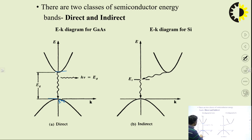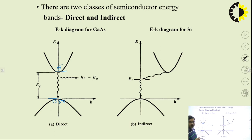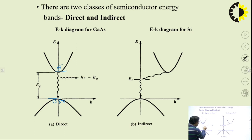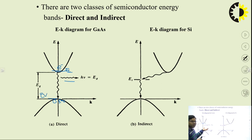If any electron is lying in the conduction band, it will be at exactly the same momentum value as a hole lying in the valence band. If this electron makes a transition from the conduction band to the valence band for recombination with the hole, then in this recombination process we get light energy. The electron loses energy as it comes from the conduction band to the valence band, and this energy loss appears in the form of optical light.